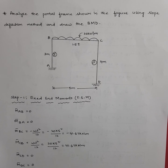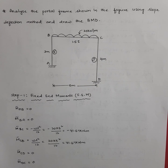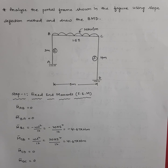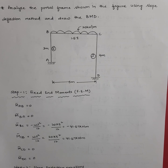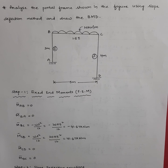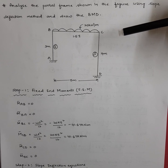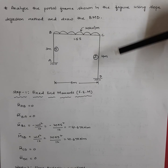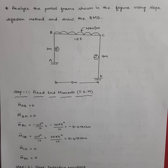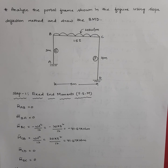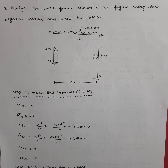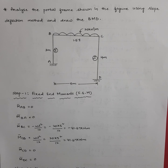Welcome back to another technical session on sway frames. In my earlier video I solved a problem related to sway frame where the loading was unsymmetrical. In this frame the columns are unsymmetrical — column AB is of height 3 meters and column CD is 4 meters, so the heights of the columns are different. This is the column-unsymmetrical condition, making this a case of a sway frame.